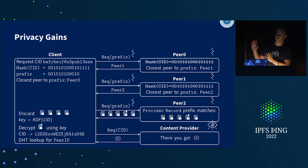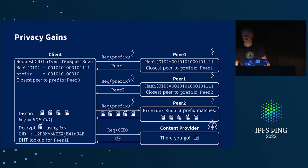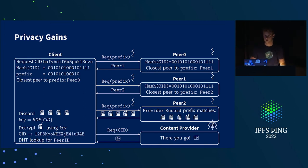That's the final picture. One additional point: encrypting provider records means every provider record is now distinct, whereas before many were identical. This makes something like a network indexer's database much worse, because we've gone from a small number of providers to one distinct provider record per CID.